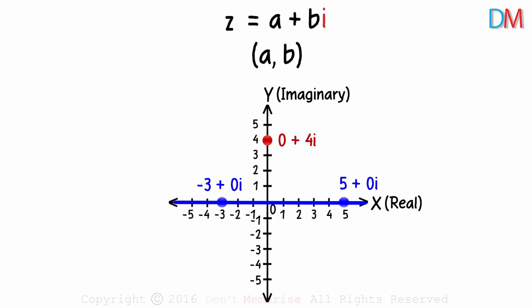Every point on the x-axis corresponds to a complex number of the form a plus 0i. And every point on the y-axis corresponds to complex numbers of the form 0 plus bi.